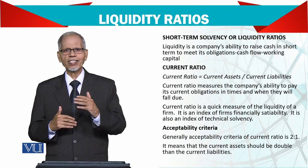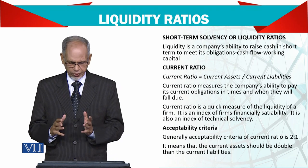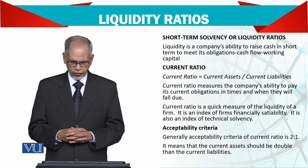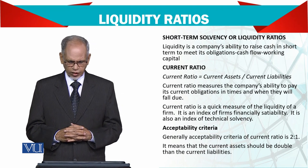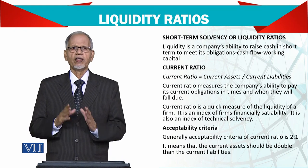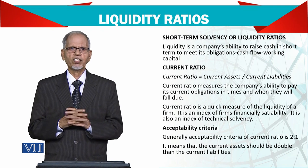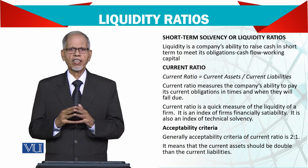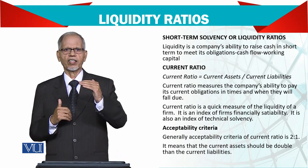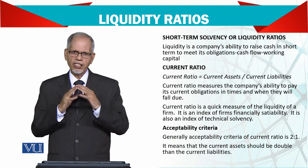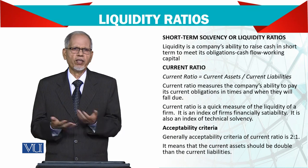Current assets should be greater than current liabilities when they fall due. Current ratio is a quick measure of the liquidity of a firm; it is an index of a firm's financial stability and also an index of technical solvency. Companies having a current ratio problem will not survive. Usually the ratio should be 2:1 — current assets should be double. If it is 1:1, that is also dangerous, and if it goes below that, it is even more dangerous, meaning you will not be able to pay off your liabilities.